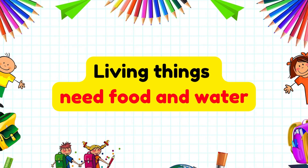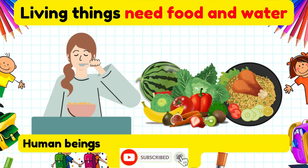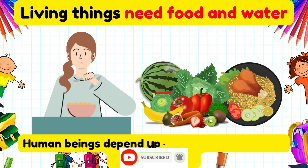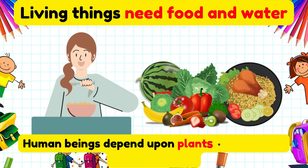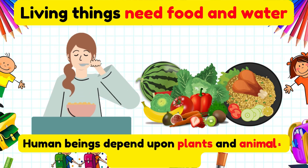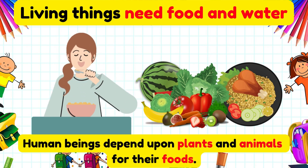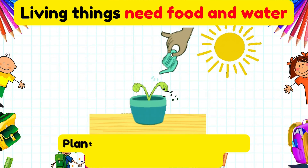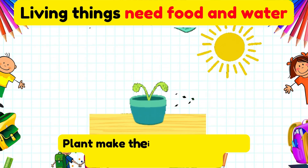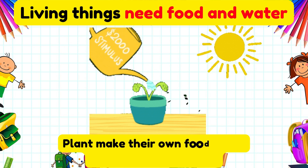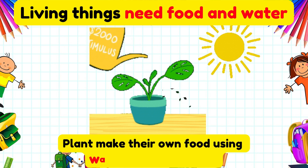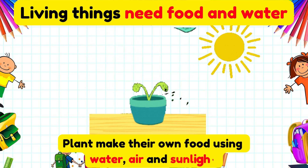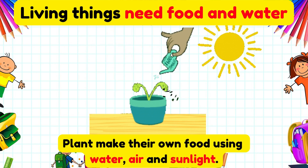Living things need food and water. Human beings depend upon plants and animals for their food. In the same way, plants make their own food using water, air, and sunlight.